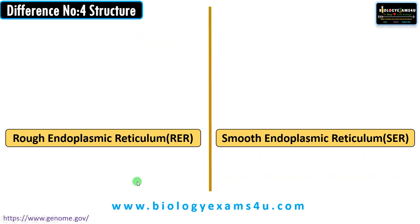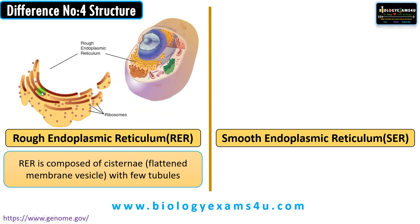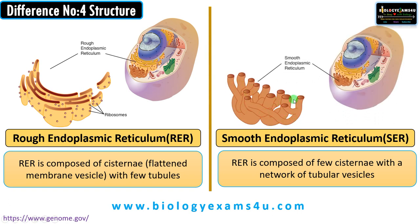Difference number four regarding the structure. RER is composed of cisternae — these flattened sacs are called cisternae — with very few tubules. Whereas SER is made up primarily of tubules, forming a network of tubules with very few cisternae or flattened membrane vesicles.